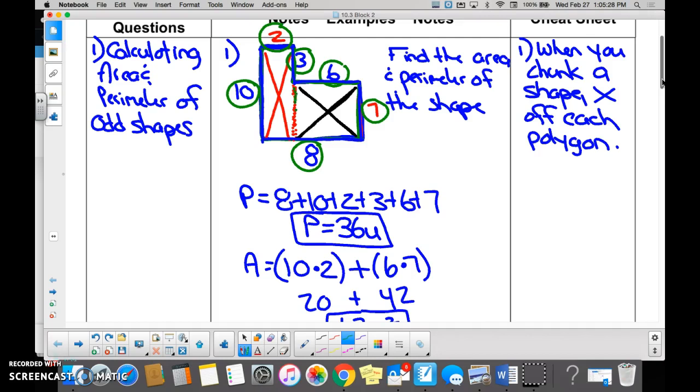Chunk it. So we took, see where this red dotted line is, I'm now making it green. We've chunked it into two different rectangles. And then we found the area of this rectangle. So we put an X there and then we find the area of this rectangle. So we put an X there, right? Yes.